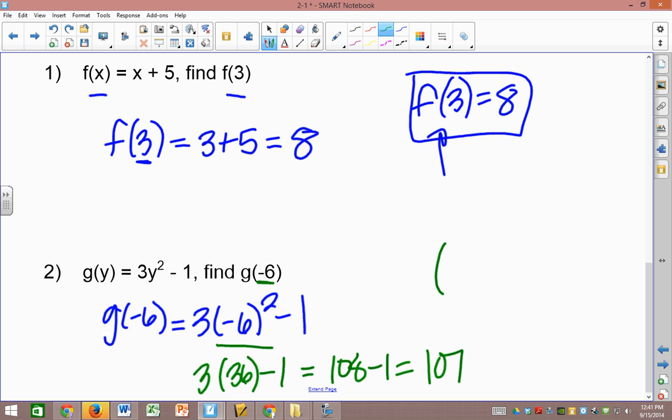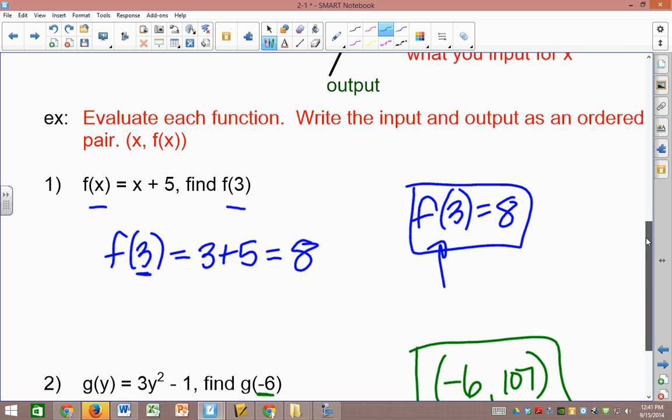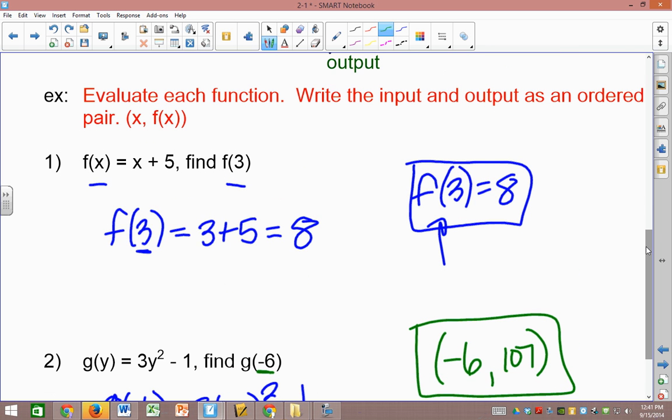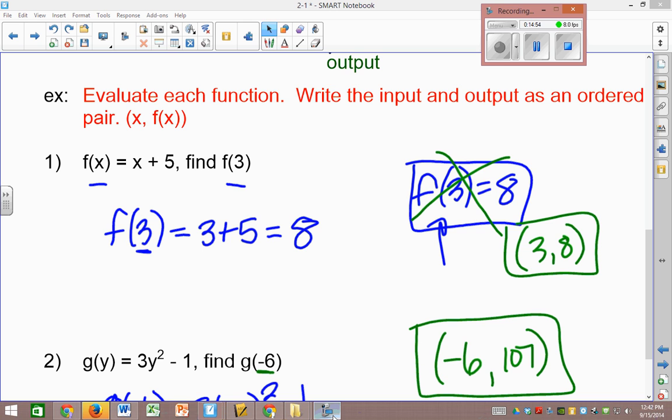We are supposed to write it as an ordered pair. So the input value and then the output value. I see. So instead of this as our final answer here, we're going to write it like this. Well, that's pretty easy. Just whatever you plugged in. Because 3 was the x you used and 8 was your answer. And that's what x and y is. All right. I think we're really done now.